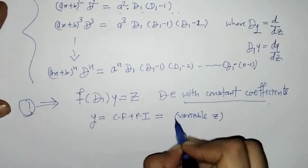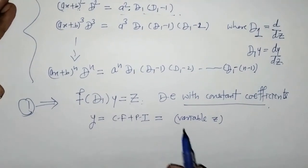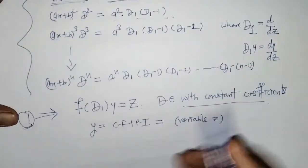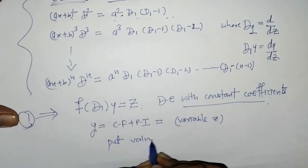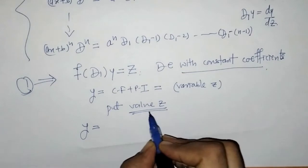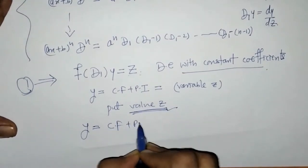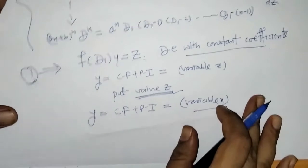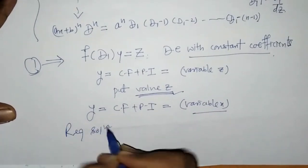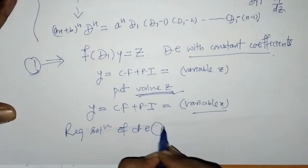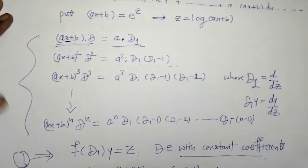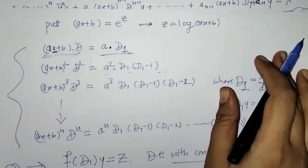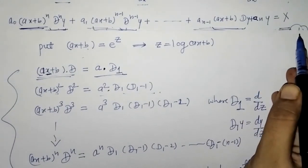The solution obtained will be in variable z, but since the given differential equation is in variable x, we substitute back the value of z to get y = CF + PI in variable x. This is the required solution. This is how we proceed for Legendre's linear differential equation, and the procedure will become clear through an example.